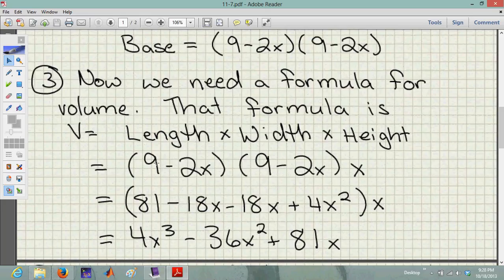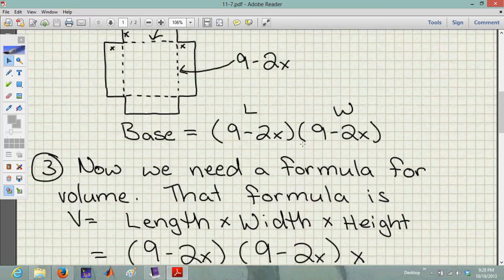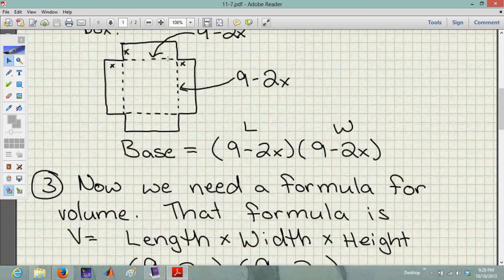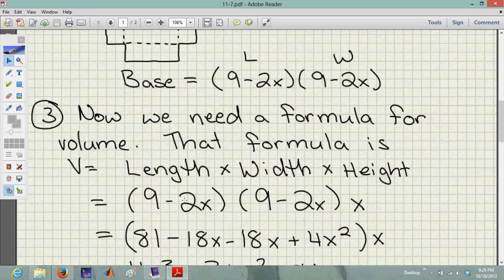So we have our length, we found that up here, that was the 9 minus 2x. We have our width, that's the 9 minus 2x. But now think about it for a second, what's our height? Well if I fold one of these flaps up, the height is just going to be x. I fold these flaps up, my box is going to be x inches high, because that's the length of these flaps. So I need length is 9 minus 2x, times width is 9 minus 2x, times height is x.